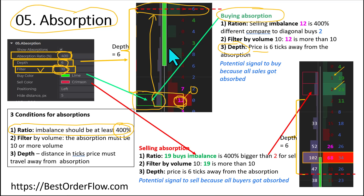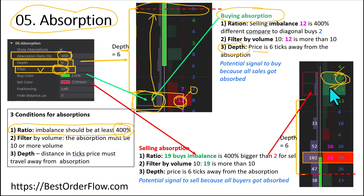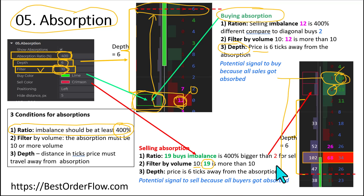The price must travel at least 6 ticks — which we selected as depth — in order for the absorption to become visible as a signal. The selling absorption calculates that there is a buying imbalance of 19, which is more than 2 by 400 percent or more. 19 is also more than the volume filter of 10, so it's valid. When the price travels more than 6 ticks from this area, the imbalance becomes visible as a signal.